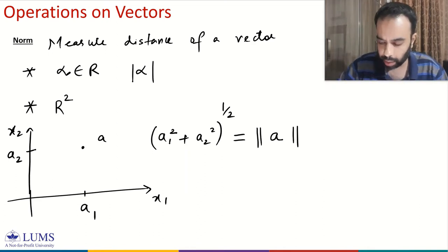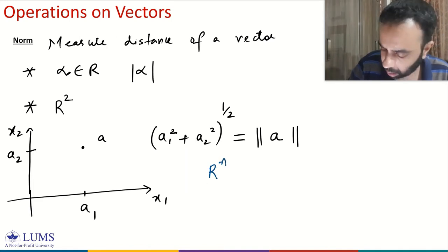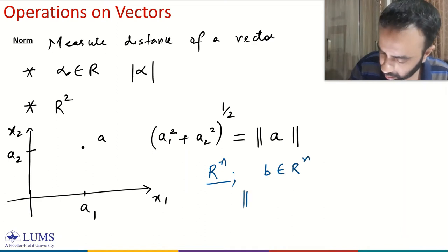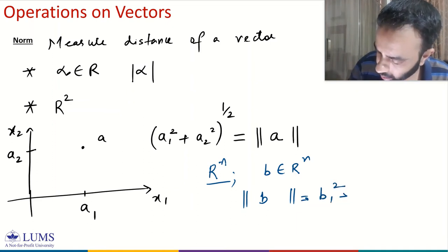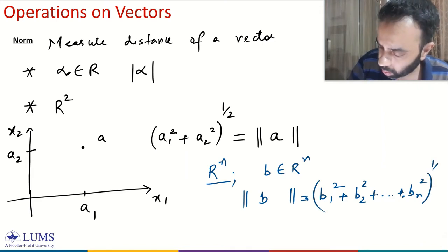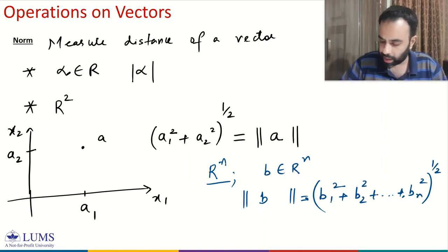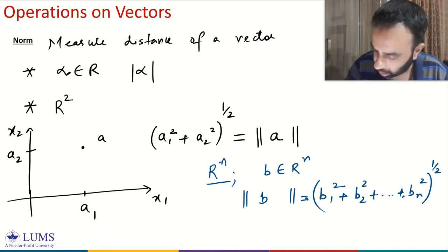We can extend this concept to Rn. For a vector b belonging to Rn, its norm is given by the square root of b1 squared plus b2 squared plus ... plus bn squared — that is, raised to the power 1 over 2. This is the definition of a norm. This is in fact a special type of norm, and in some textbooks we add a subscript 2 to indicate the 2 in the definition.